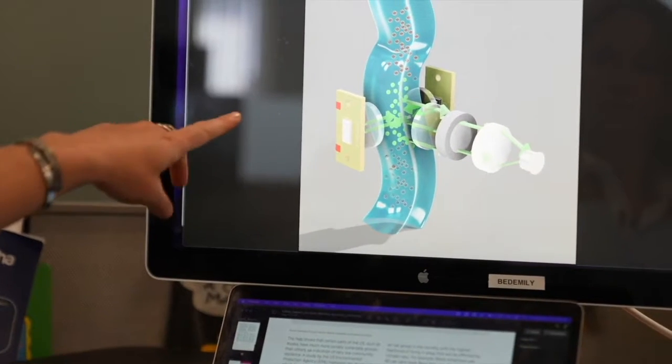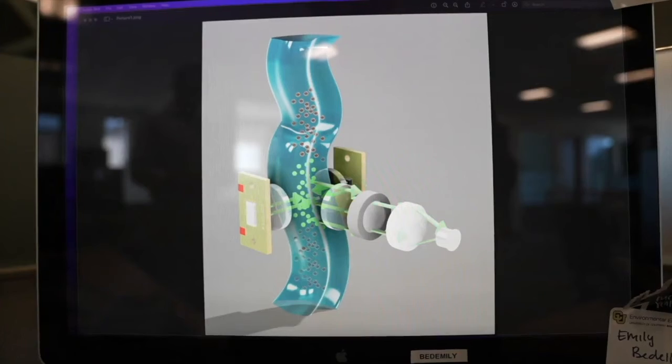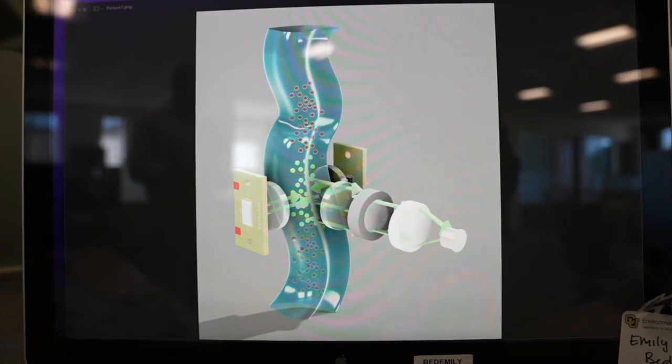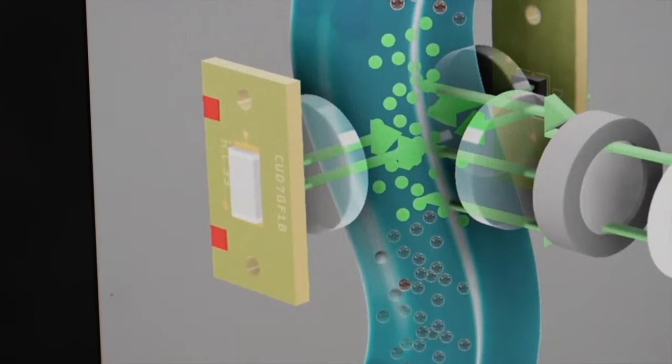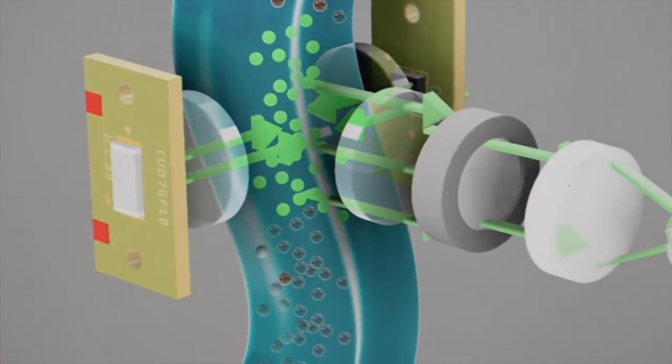So this is kind of how the sensor works. Emily's method takes out all of those steps and instead tests for the bacteria using UV light, which illuminates the particles before a sensor counts them.